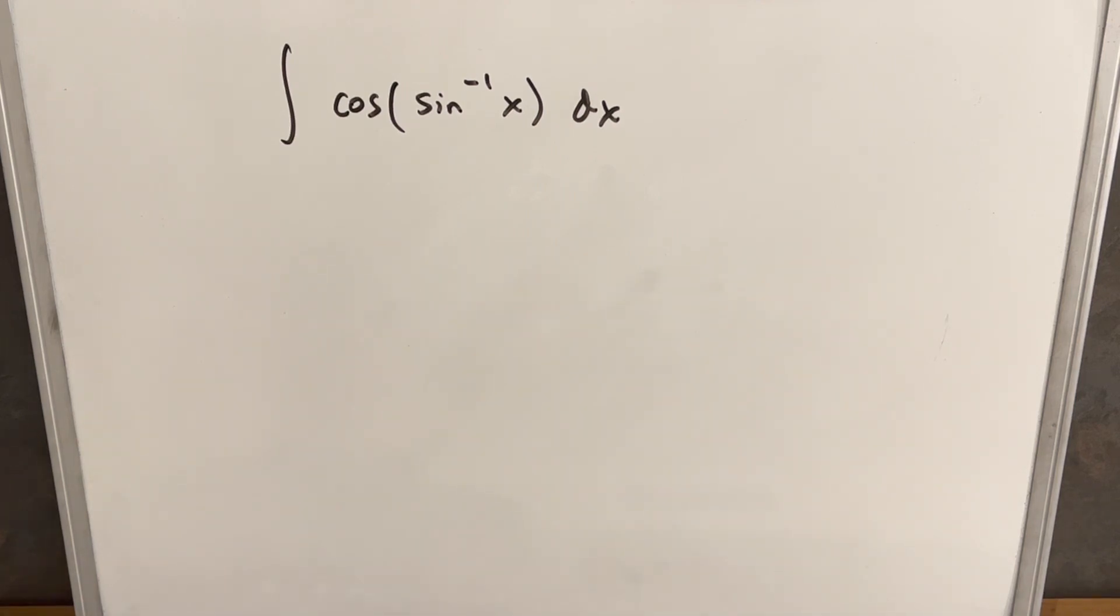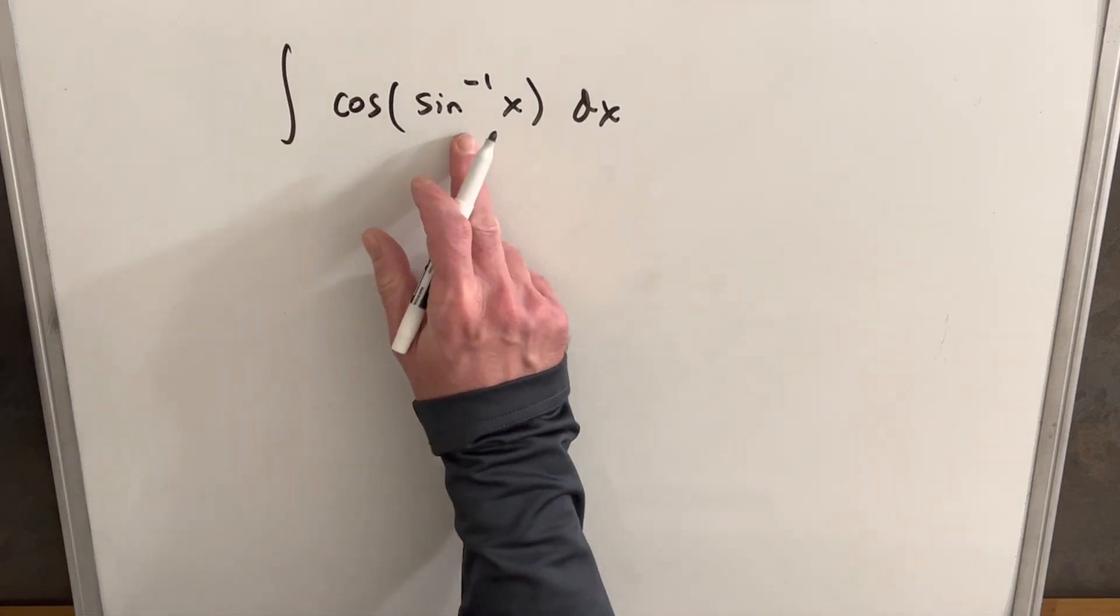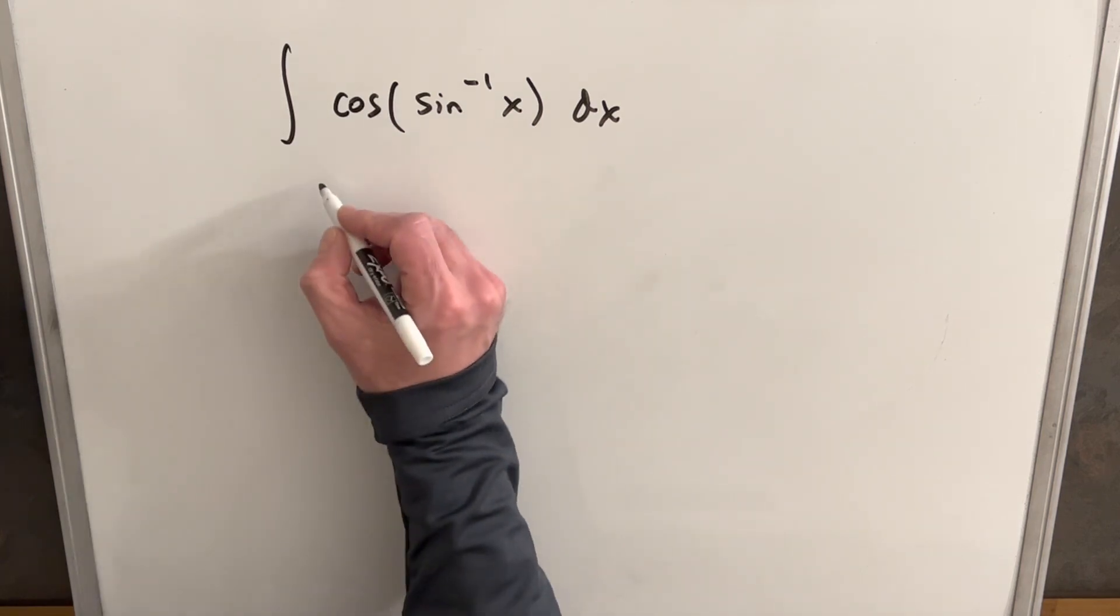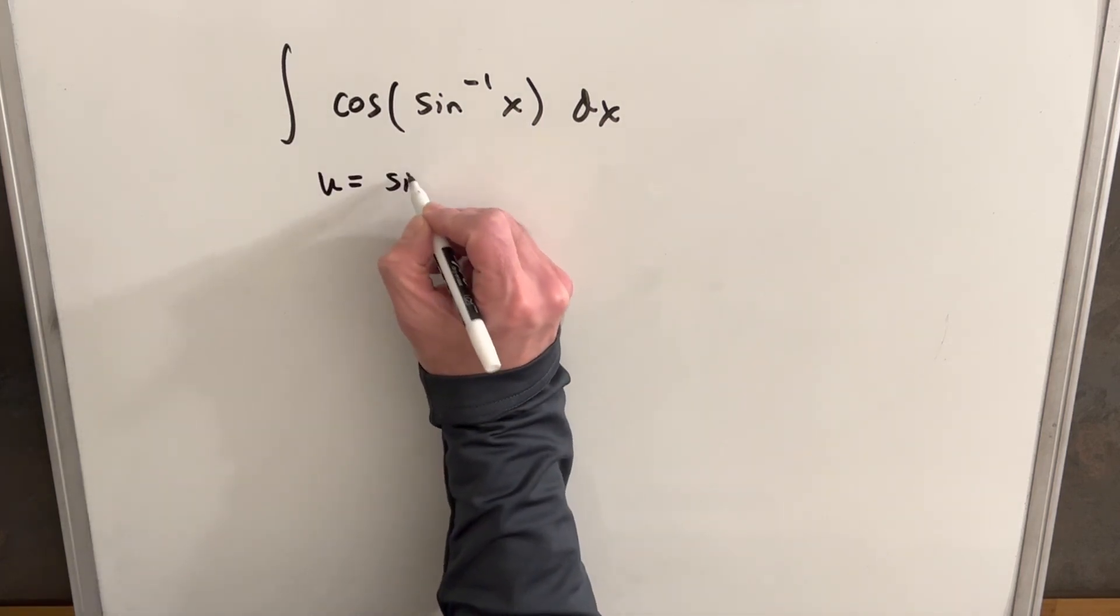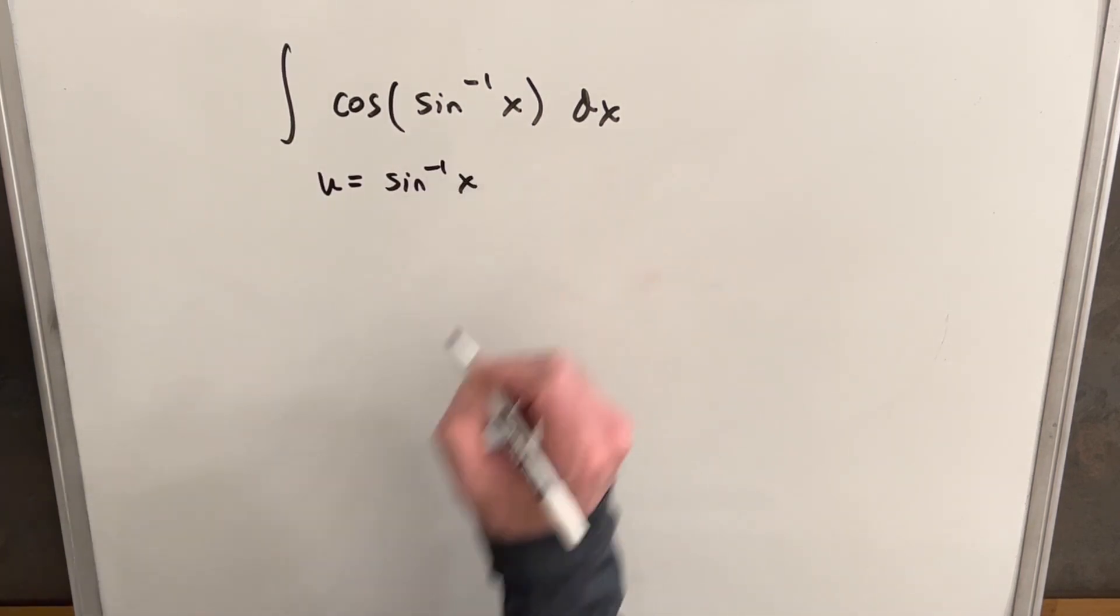To get started, what I really want to do is a u substitution. We just don't know how to deal with having that sine inverse there. So I'm going to call my u arc sine of x.